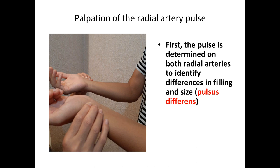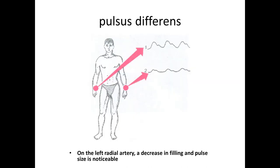Pulse study starts from detection of pulse in the radial artery. You should determine pulse in both radial arteries and identify any differences in filling and size. If your patient has a different pulse on each radial artery, this is called pulse difference. For example, on the left radial artery there may be decreased filling and noticeable reduction in pulse size.